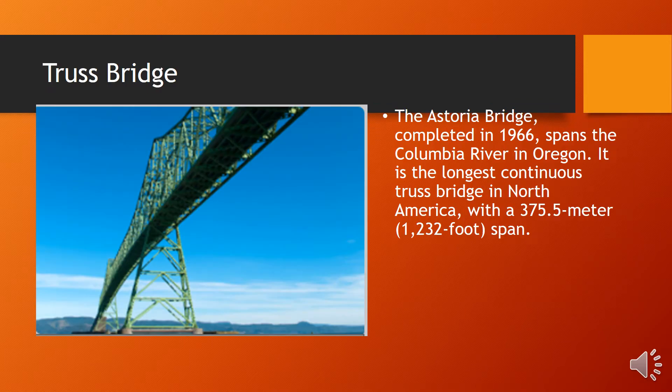The truss bridge. The Astoria Bridge, completed in 1966, spans the Columbia River in Oregon. It is the largest continuous truss bridge in North America, with a 375.5 meter or 1,232 feet span.